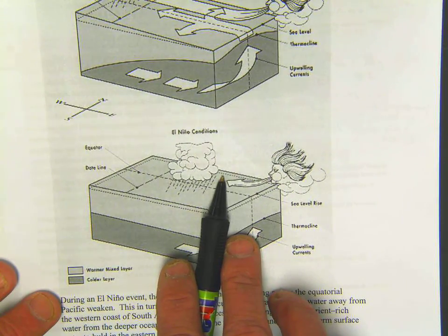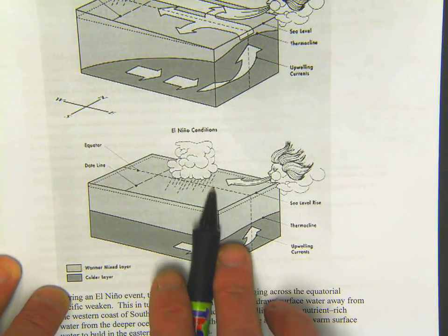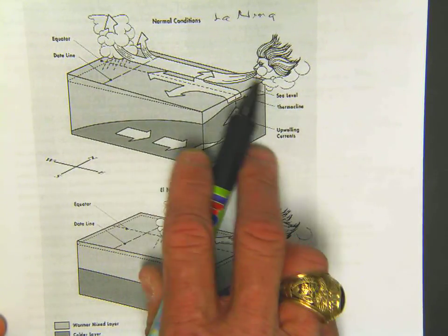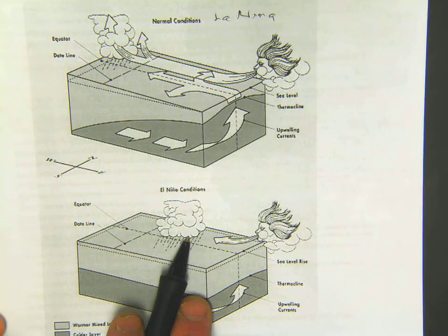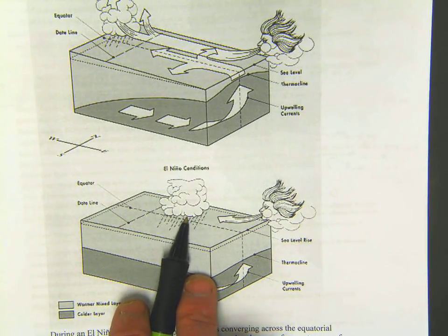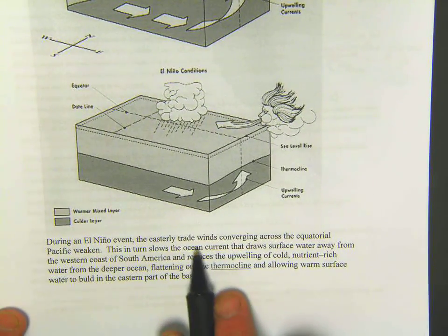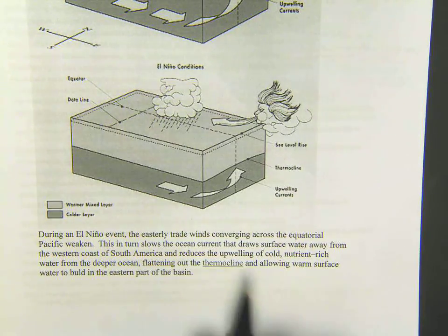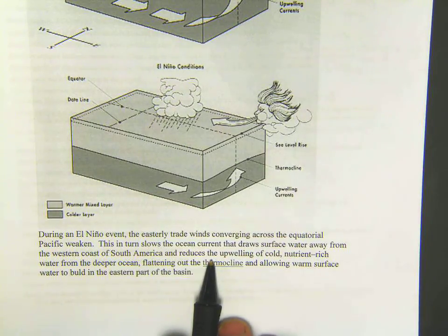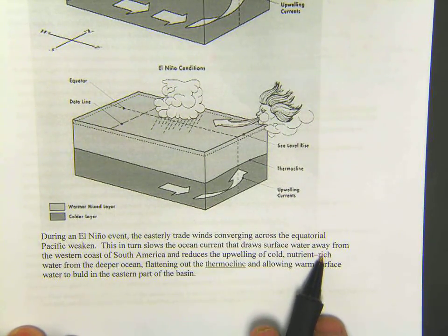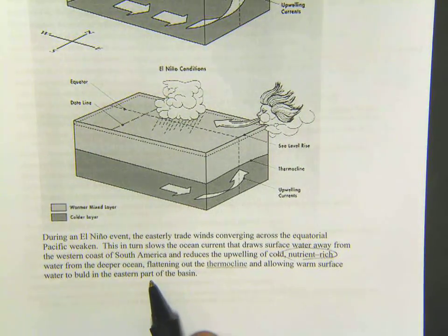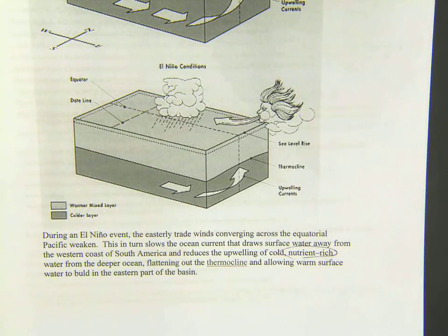During El Niño, the trade winds slow down considerably, so instead of warm, moist air being moved out by circulation, it stays concentrated in one heavy spot — you get lots of rain in some areas and very little in others. The eastern trade winds converging across the equatorial Pacific weaken, reducing the upwelling of cold, nutrient-rich water from the Pacific Ocean. It flattens out the thermocline and allows warm surface water to build up in the eastern part of the basin — and where that warm surface water builds up, you get a tremendous amount of rain.